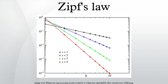Zipf's law, an empirical law formulated using mathematical statistics, refers to the fact that many types of data studied in the physical and social sciences can be approximated with a Zipfian distribution, one of a family of related discrete power law probability distributions.